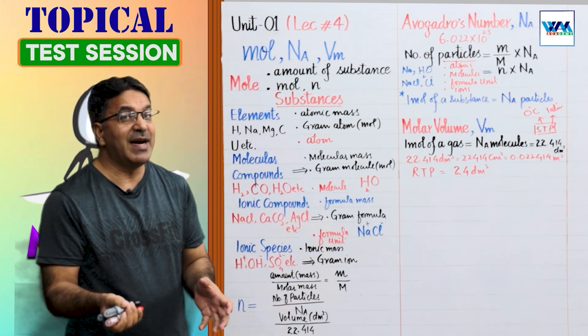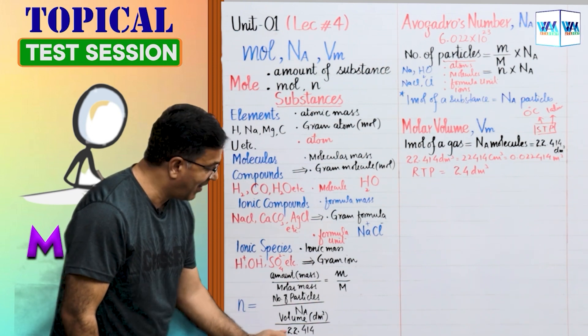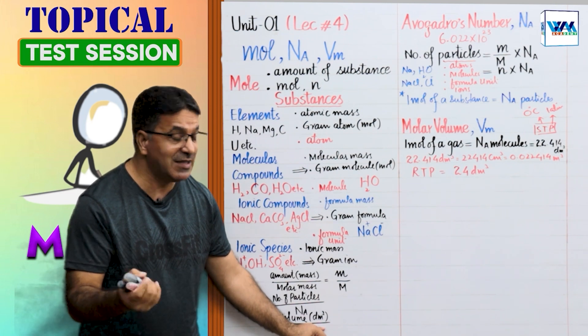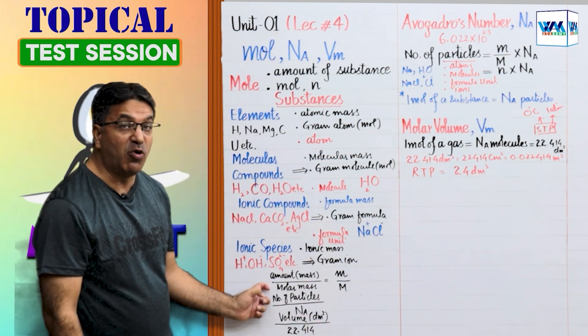You can calculate the number of moles from the volume of the gas - volume of the gas divided by 22.4 in case of volume in dm³. The third method is you can also calculate the number of moles when the amount of mass of the substance is given.